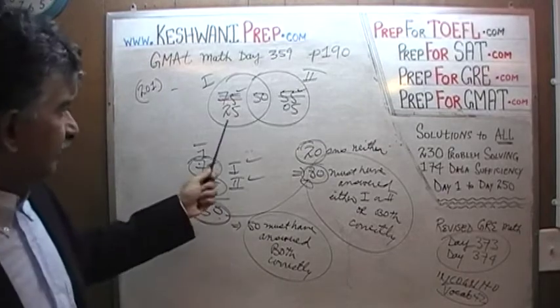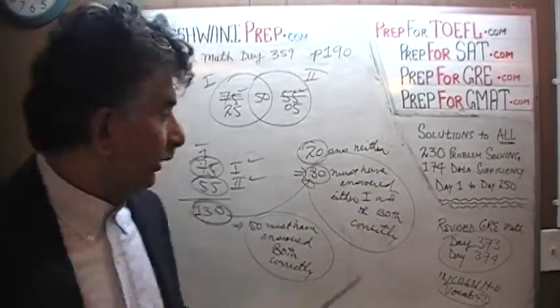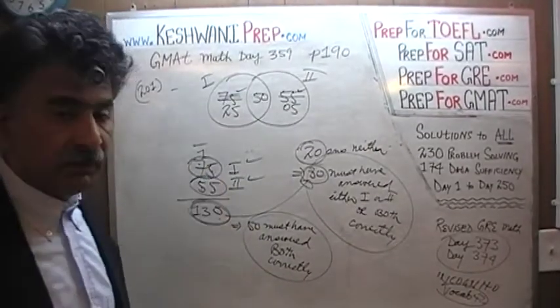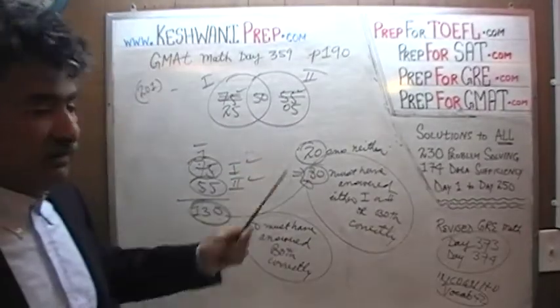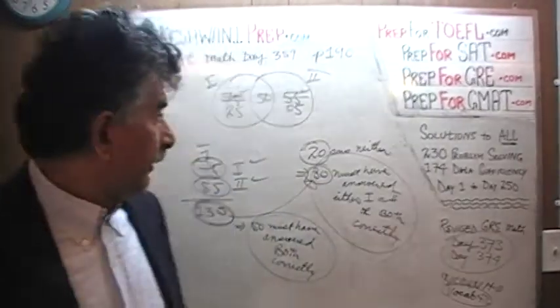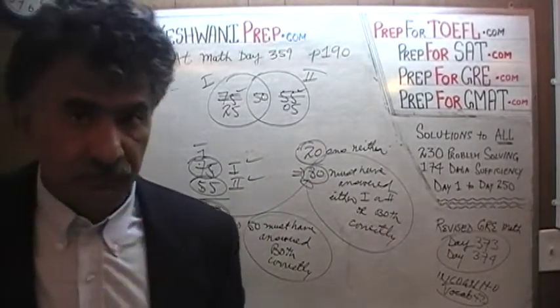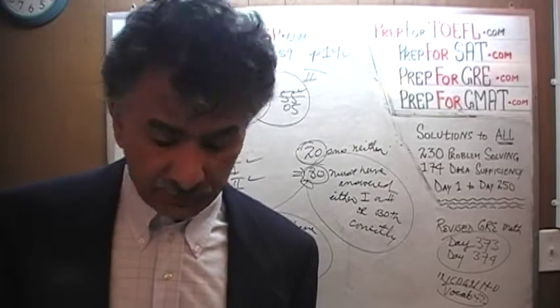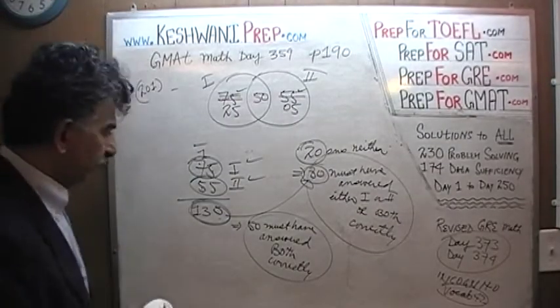That tells us: 25% of the people answered only question one correctly, only 5% answered only question two correctly, 50% answered both of them correctly, and therefore 20% answered neither. We did a very similar question and I'm going to do it here.